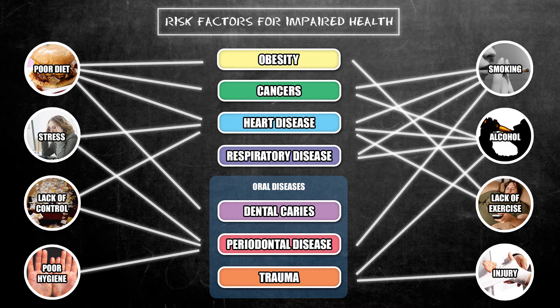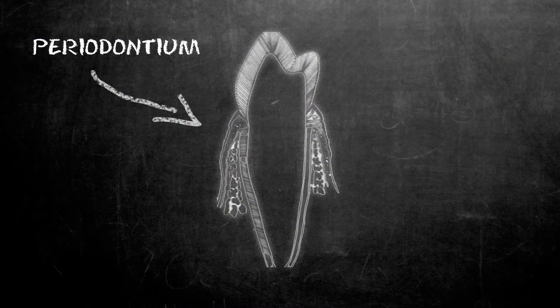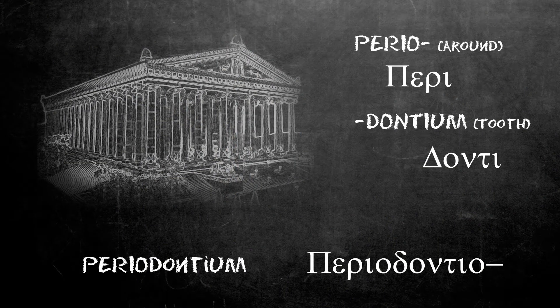Our goal is to preserve the natural dentition by ensuring proper oral hygiene, promoting healthy and low sugar diet, and informing the population about risk factors such as smoking and alcohol. Dental care is a significant economic burden in developed countries, with 5 to 10% of public health expenditures on oral health programs. We are here to discuss the periodontium. Examining the Greek etymology of the word, we identify peri-odontium, meaning the tissue surrounding the tooth.